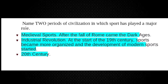Name two periods of civilization in which sport has played a major role. First, medieval sports — this is after the fall of Rome came the Dark Ages. Next, the Industrial Revolution, at the start of the 19th century, when sport became more organized and the development of modern sports started.